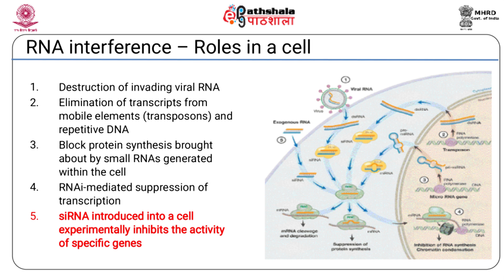The process of post-transcriptional gene silencing was shown to have several roles in a cell. It was a defence mechanism for preventing virus multiplication and also appeared to prevent multiplication and spread of transposons. Silencing also could be viewed as a way of regulating gene expression. This observation led to the idea that introduction of double-stranded RNA into a cell experimentally could enable suppression of specific genes, and was hence a new way of manipulating gene expression.